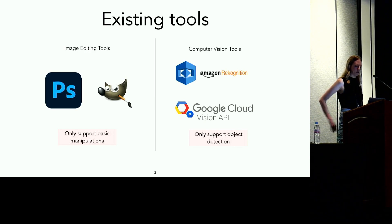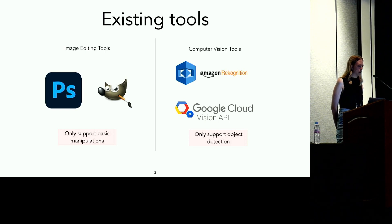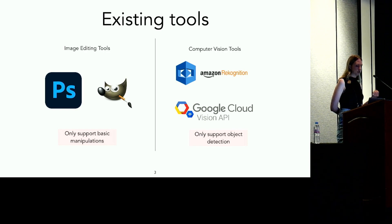Computer vision tools, like Amazon Recognition and the Google Cloud Vision API, are quite good at detecting objects in an image. Given an image, they can also identify certain interesting properties of objects, such as recognizing the same face across multiple images, and detecting whether a face is smiling or its approximate age. However, these tools don't offer support for image editing, let alone batch image processing.